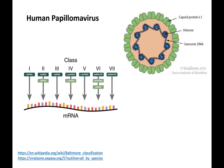This is an intro to human papillomavirus, or HPV. HPV is a class one double-stranded DNA virus with a circular genome. What's really interesting is that this virus wraps its genome around cellular histone proteins to keep it organized in the capsid.